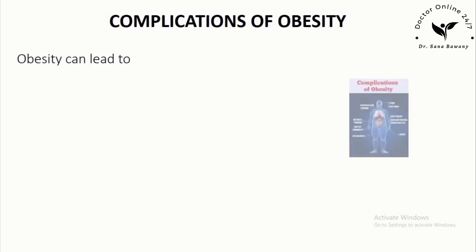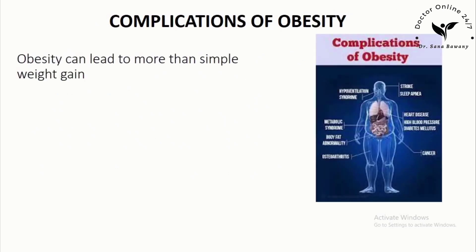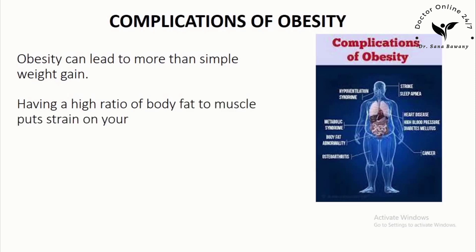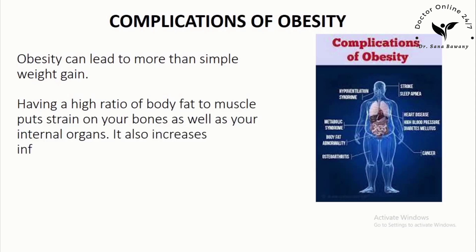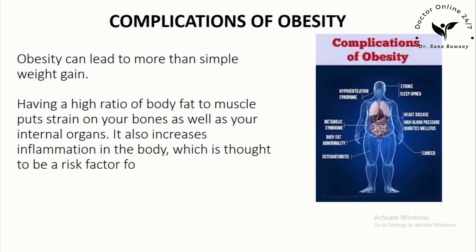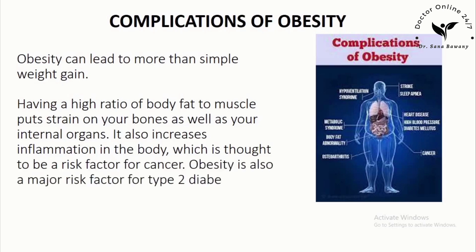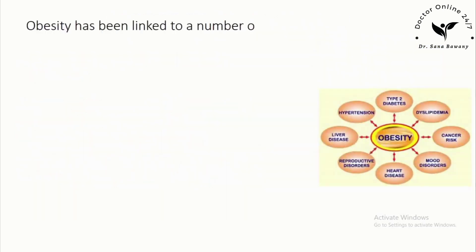Complications of Obesity: Obesity can lead to more than simple weight gain. Having a high ratio of body fat to muscle puts strain on your bones as well as your internal organs. It also increases inflammation in the body, which is thought to be a risk factor for cancer. Obesity is also a major risk factor for type 2 diabetes and has been linked to a number of health complications, some of which can be life-threatening if not treated.